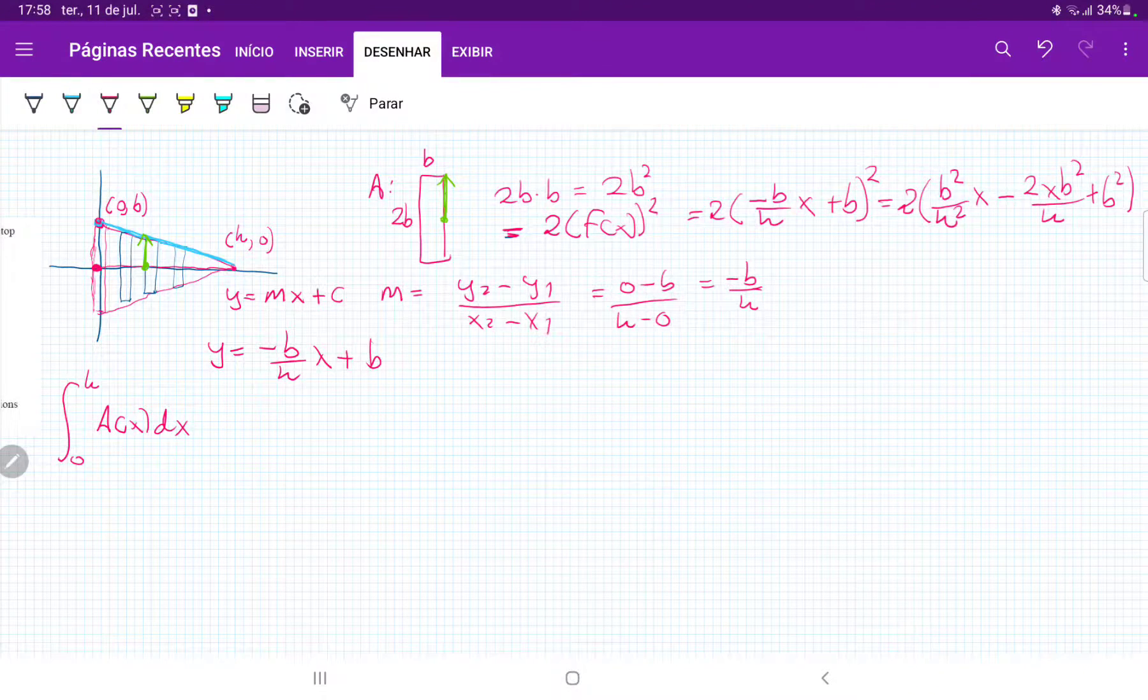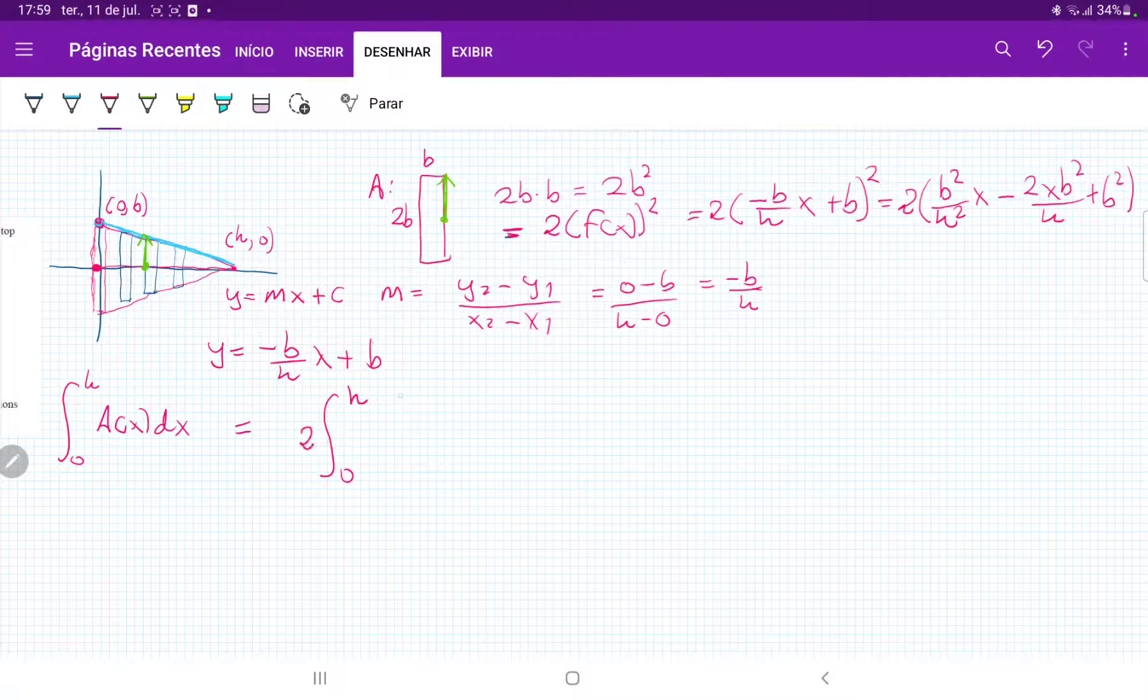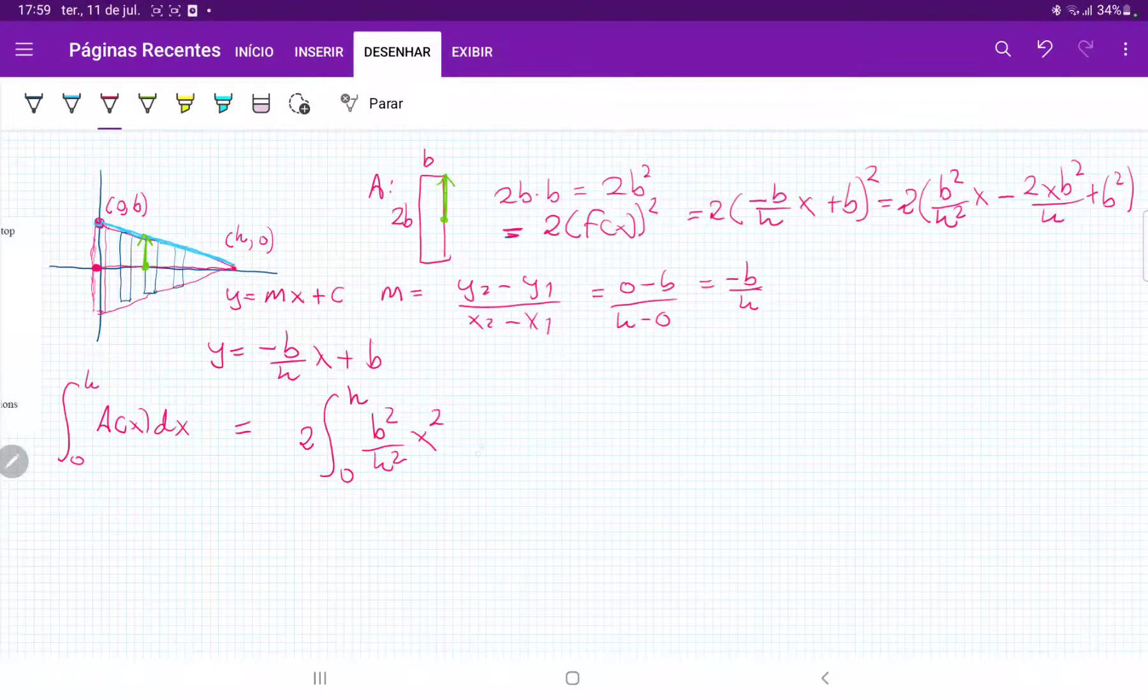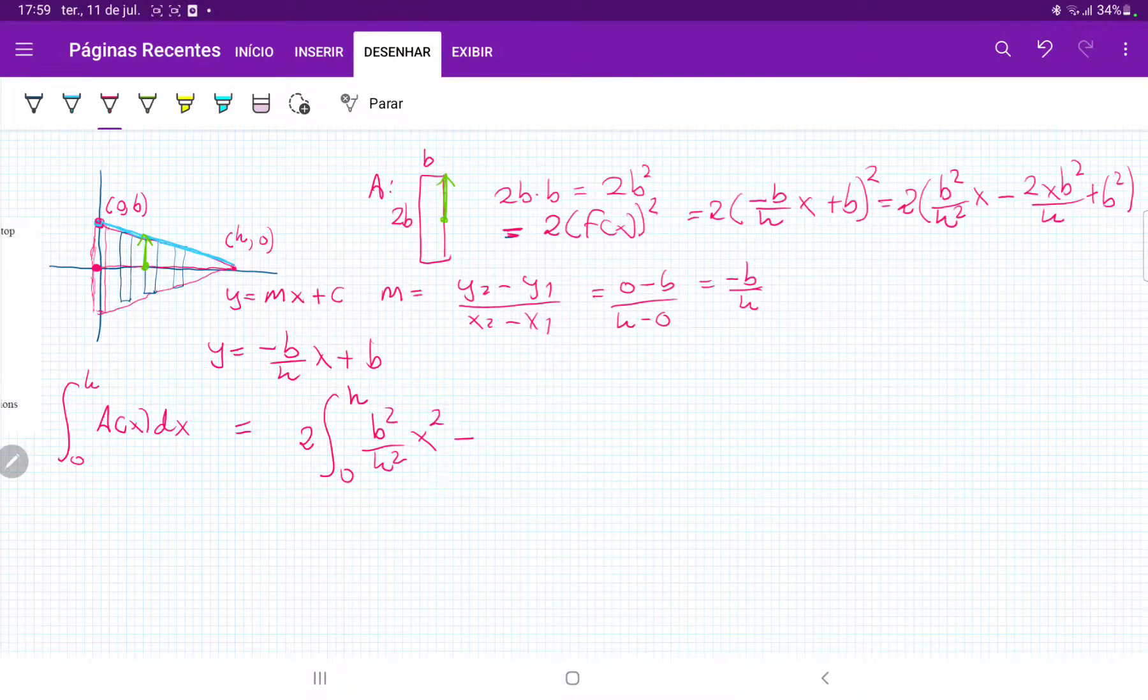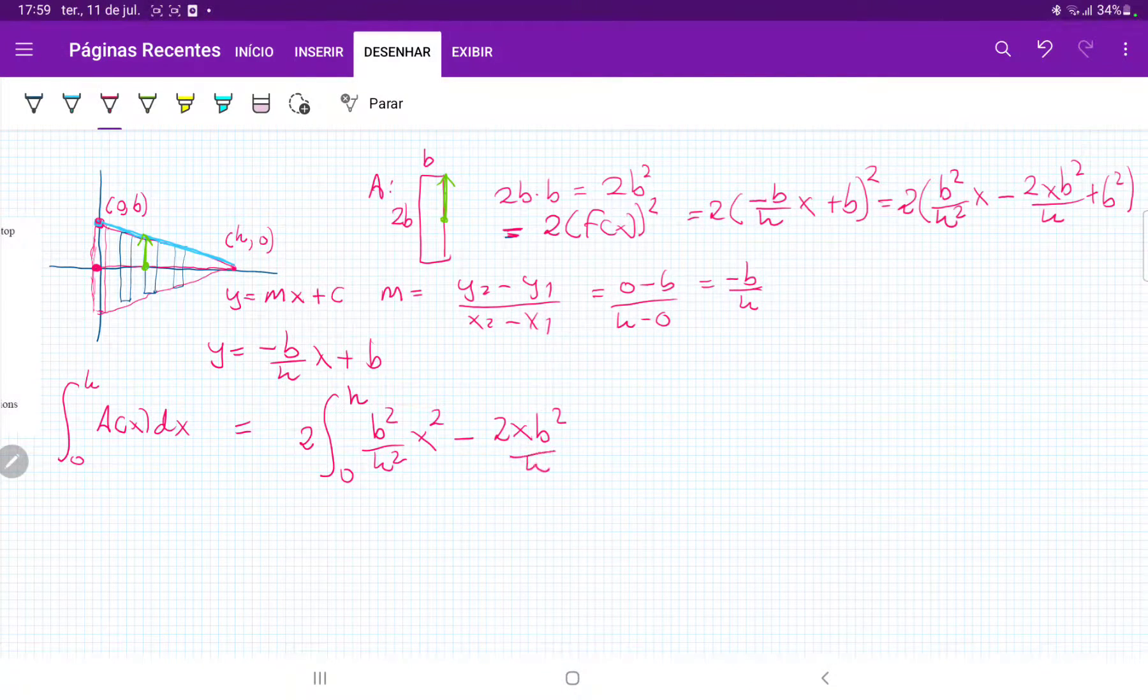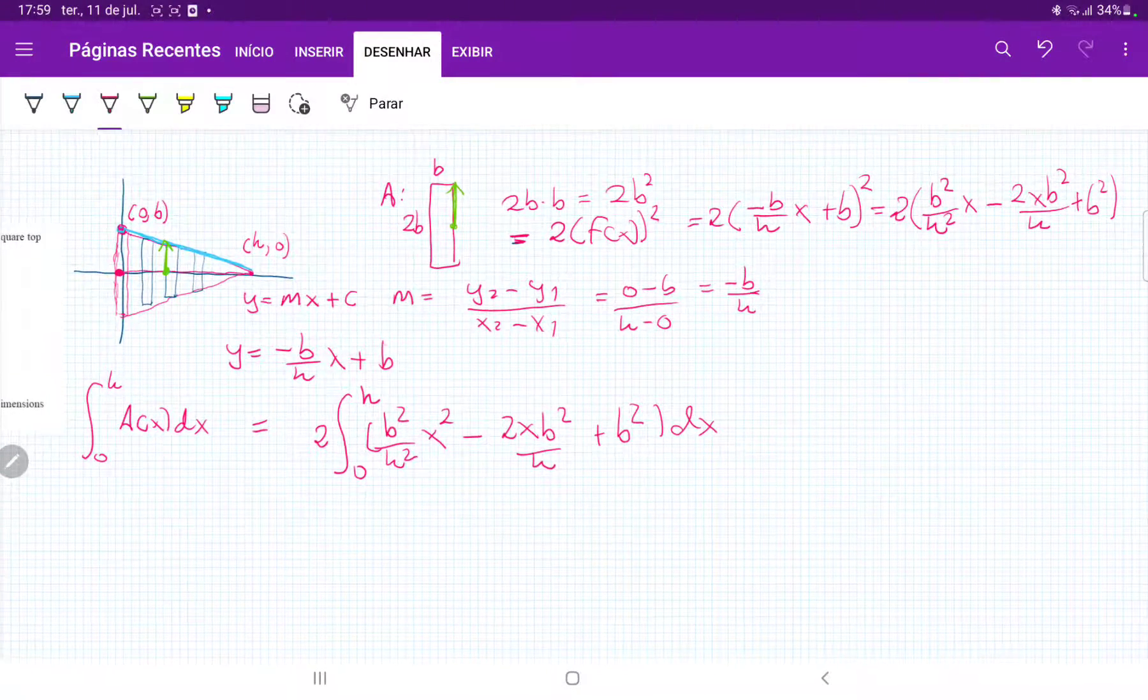So we're ready to set up our integral. So this is the integral from 0 to h of, I'm going to put the 2 outside because it's a constant, so 2 times b squared over h squared x squared, and then minus 2xb squared over h, and then plus b squared, and all of this times dx, because we're summing it up across the x-axis.